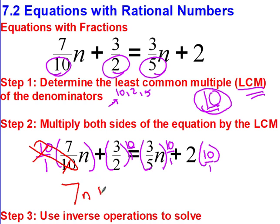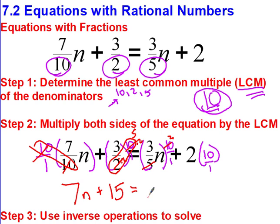Bringing that down: plus 3 over 2 times 10 over 1. The 2 and 10 cross-simplify — divide by 2 — so 10 becomes 5, and I have to do 3 times 5, which is 15. Then 3 over 5 times 10: divide by 5, that cancels, so 10 becomes 2, and 3 times 2 is 6 — the N stays. Plus 2 times 10 is 20.